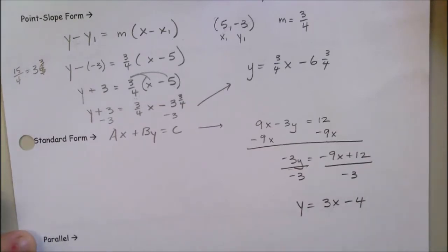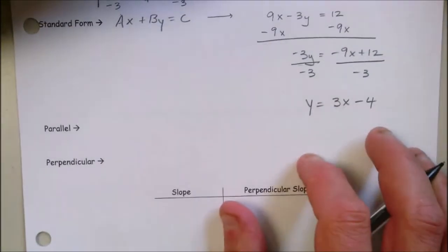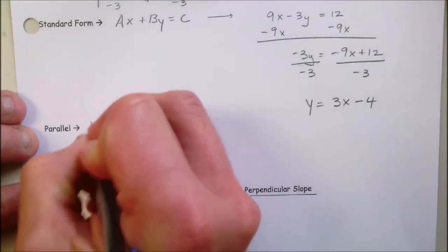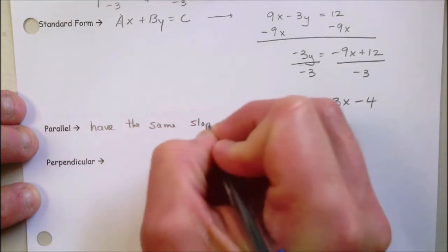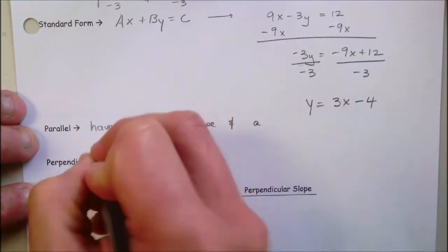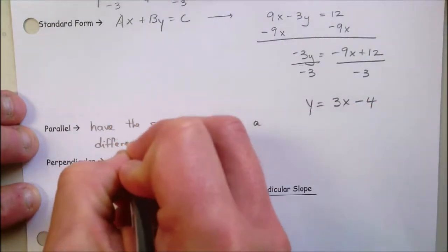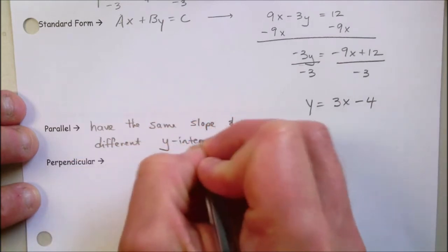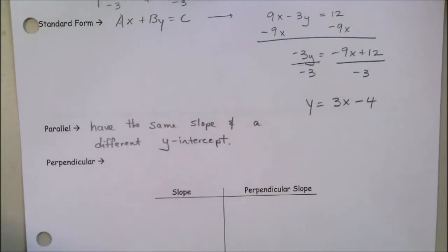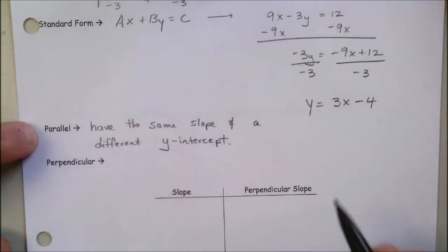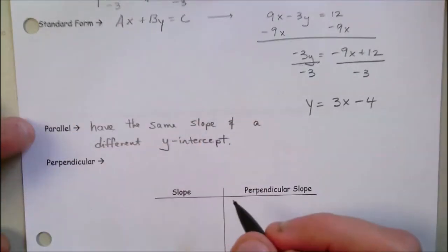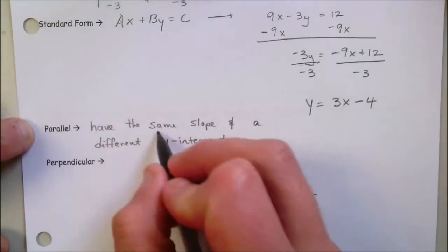Parallel lines have the same slope and a different y-intercept. If you think about it — if they have the same slope and the same y-intercept, they are the same line. These are lines that never intersect and are co-planar, which is why they have the same slope.